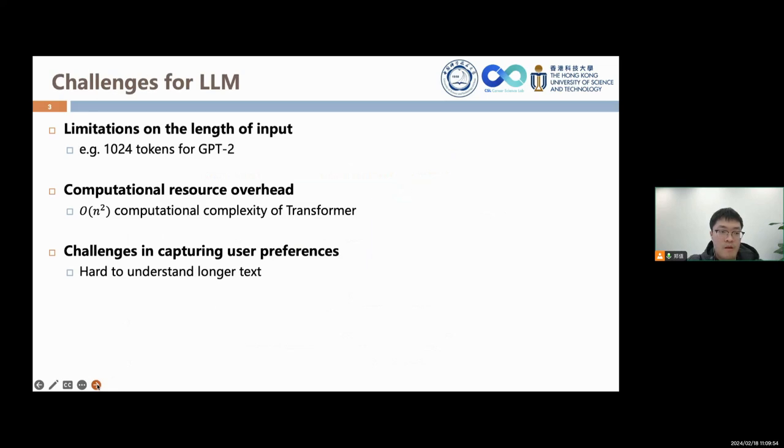However, there are some challenges when we want to utilize large language models in text-rich recommendation. The first challenge is the limitations on the input length. For example, we can only input about 1000 tokens to GPT-2 model, which can be insufficient for text-rich recommendation.